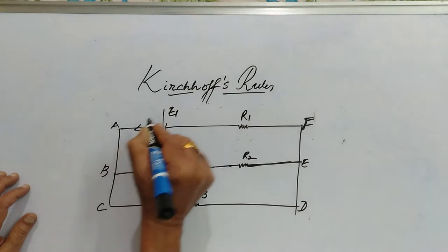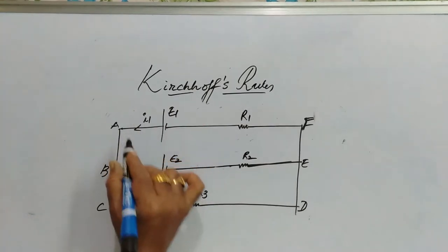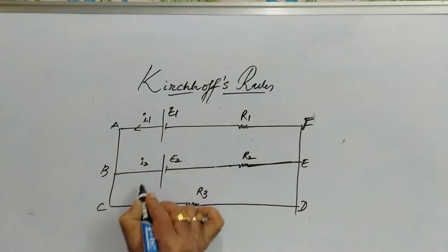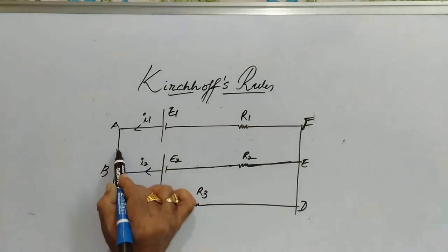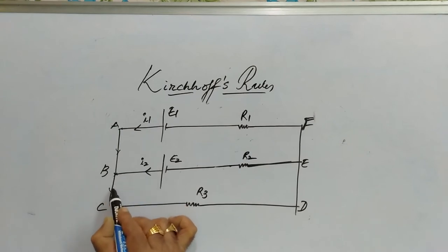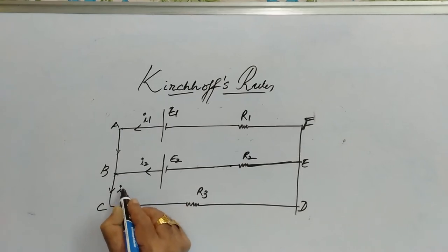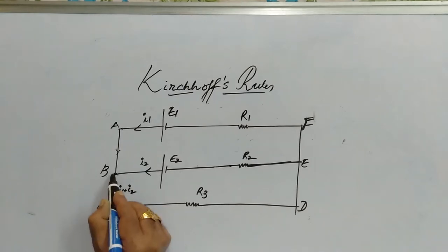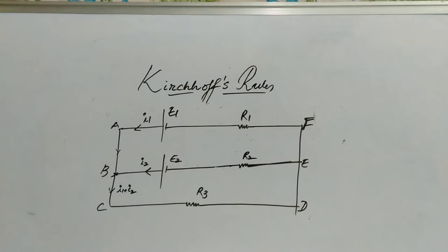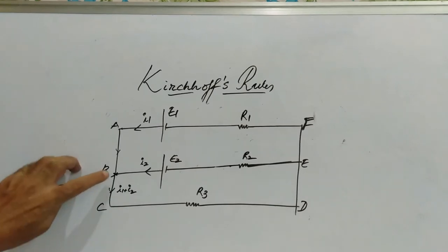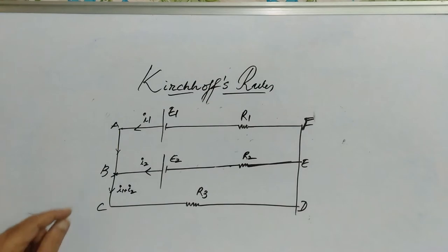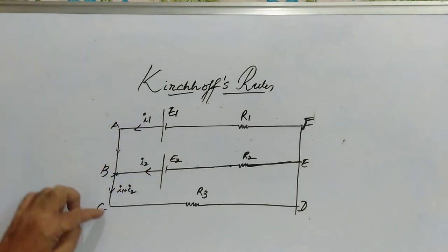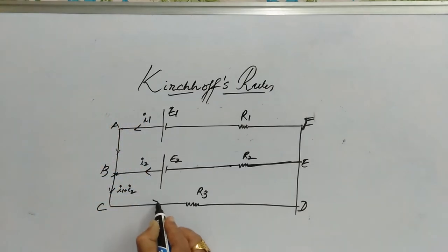So it is up to you to decide the currents. Let's consider that i1 current is drawn from the first cell and i2 is drawn from the second cell. i1 comes here and i2 comes here, so at this junction this must be i1 plus i2. From the first Kirchhoff's rule, the sum of the currents coming towards the junction must be equal to the sum of the currents moving away from the junction.